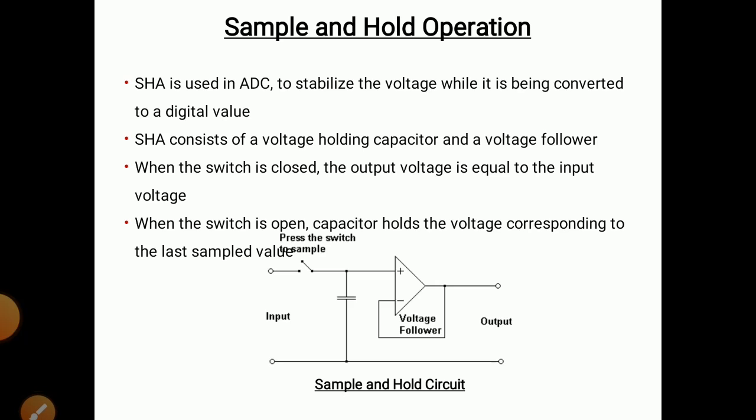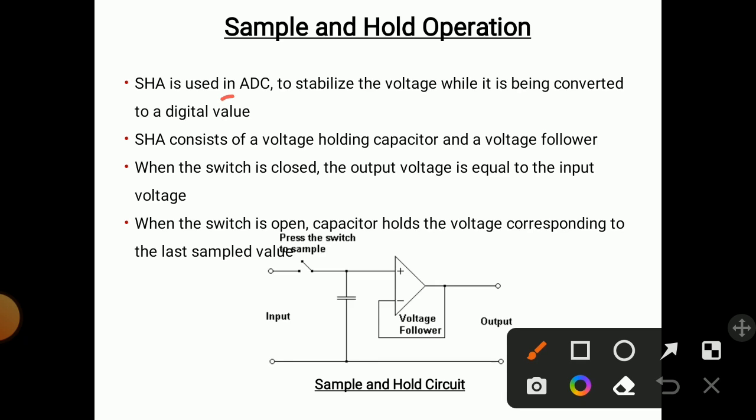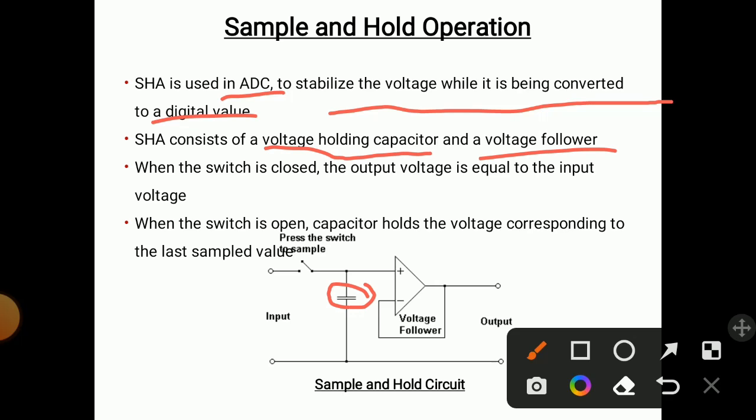Now we will see the sample and hold operation. With the help of the sampling method we have taken samples of the original signal. These samples need to be converted into digital form with the help of an analog to digital converter (ADC). Each sample gets converted into digital form one by one sequentially. Sample and hold operation is used in the ADC to stabilize the voltage while it is being converted to a digital value. The sample and hold circuit consists of a voltage holding capacitor and a voltage follower. The capacitor holds the voltage — whatever voltage comes to it, it holds that voltage.